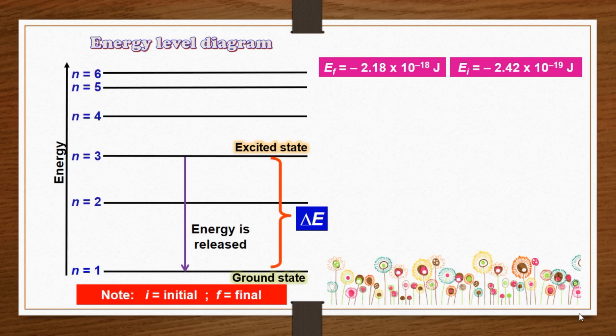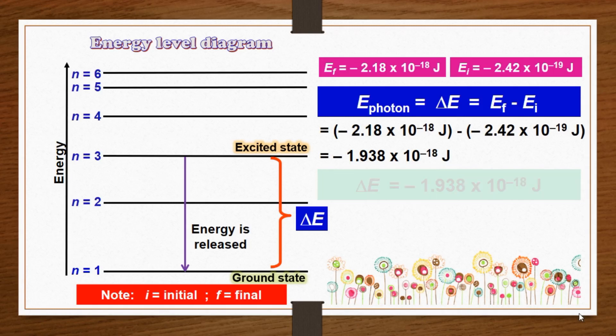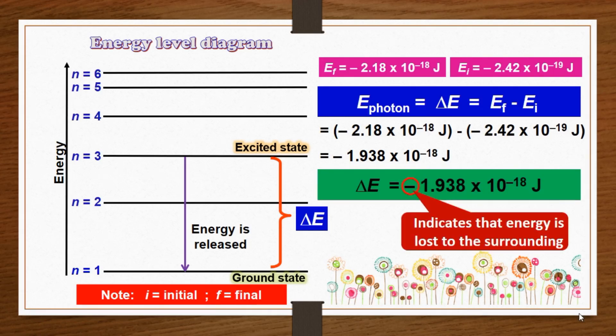The difference between the energies of the initial and the final states can be calculated by using the following equation. When a photon is emitted, the delta E is negative, which indicates the energy lost to the surroundings.